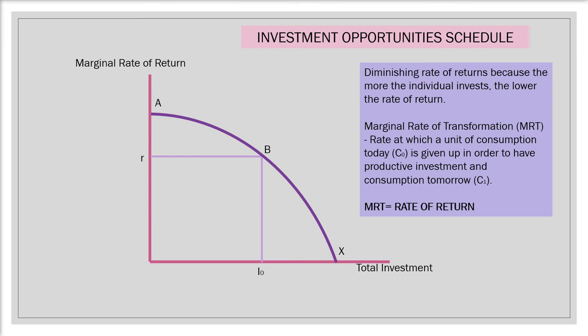The investment opportunity schedule represents the level of investments available to an individual given their endowed income. The individual cannot invest beyond this curve, that is to the right of curve A-B-X. If the individual chooses to invest anywhere to the left of the curve, it means they are not utilizing their fullest capacity to consume tomorrow. The individual moves along the A-B-X curve, which is the optimum level of investments, and depending on their individual preference — the utility they receive from consumption now or consumption tomorrow — they will move along this investment opportunity schedule.